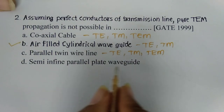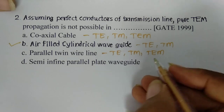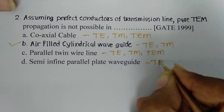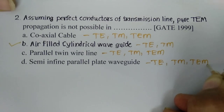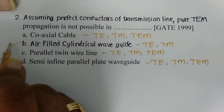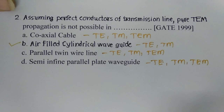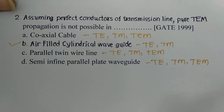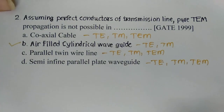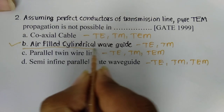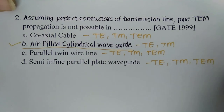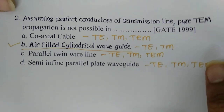For the semi-infinite parallel plate waveguide, three modes are possible: TE, TM, and TEM, so TEM mode is possible. Therefore the answer to this question is the air-filled cylindrical waveguide. Note that in both rectangular and cylindrical waveguides, TEM mode is not possible. The answer is air-filled cylindrical waveguide.